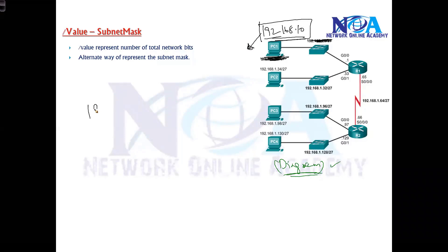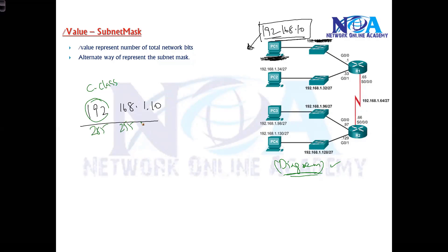Whenever I see an IP address like 192.168.1.10, based on what we've learned, it's a Class C address. As per the Class C subnet mask, I assume the default subnet mask is 255.255.255.0.